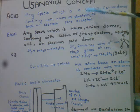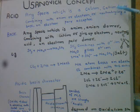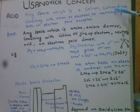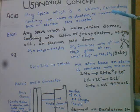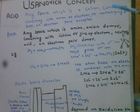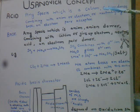Cation donor woh molecule hai jo cation ko donate karta hai. For example: NH3, NH4+, H3O+ (hydronium ion), ammonium ion, hydronium ion — yeh sab cationic molecules hain.